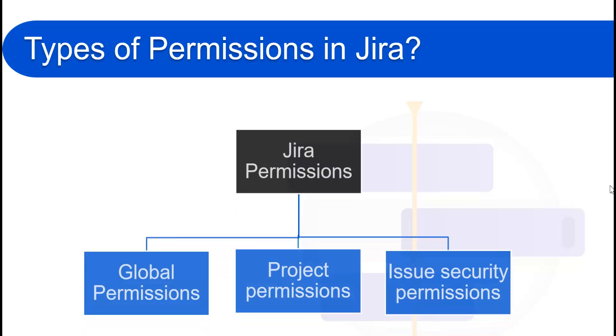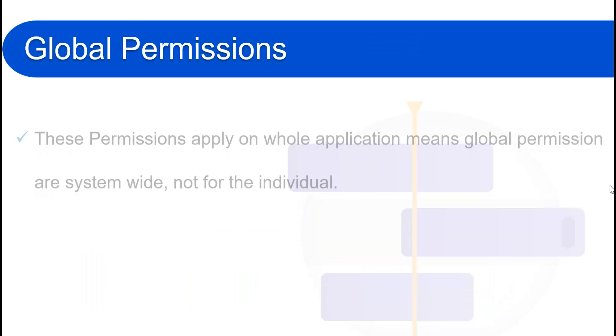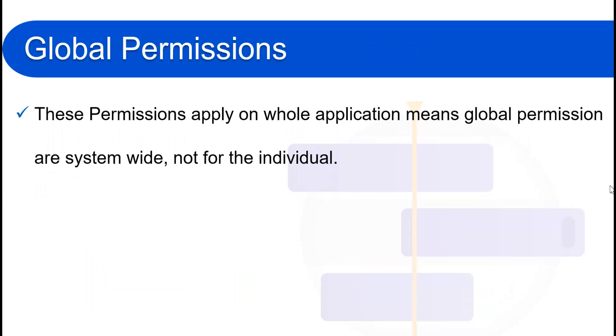Now we will see the types of permissions in Jira. In Jira we have three types of permissions: the first one is global permissions, the second is project permissions, and the third is issue security permissions.